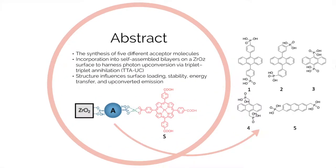Essentially, we synthesized five different acceptor molecules and incorporated them into self-assembled bilayers on a zirconium dioxide surface to harness photon upconversion via triplet-triplet annihilation. Then we studied how the structure of acceptor molecules influenced the surface loading, the stability, the energy transfer within the system, and the upconverted behavior.